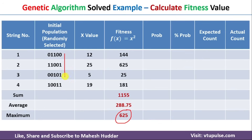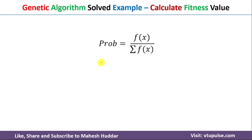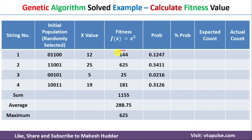We have a maximum of 625 for the initial population. Now we need to select some solutions and apply crossover and mutation to improve upon this value. To select solutions from the four chromosomes, we first calculate the probability for each chromosome using the formula: probability = f(x) / Σf(x). Here f(x) is known — 144 in the first case — and the sum of fitness values is 1155.